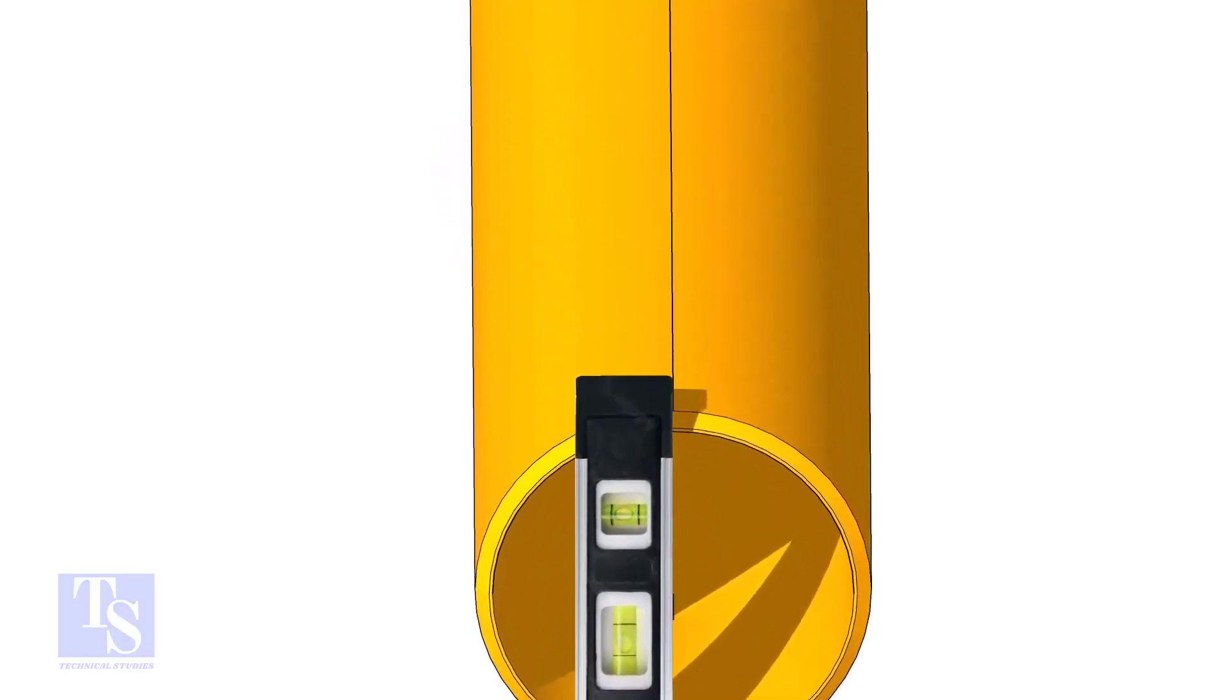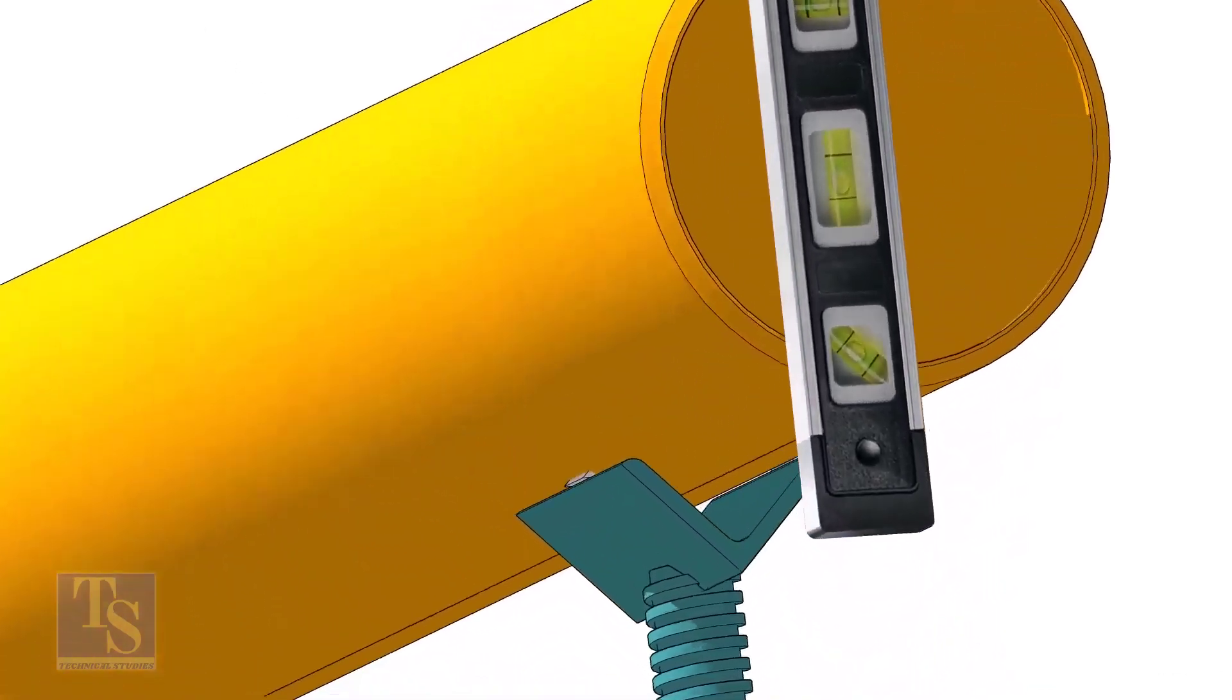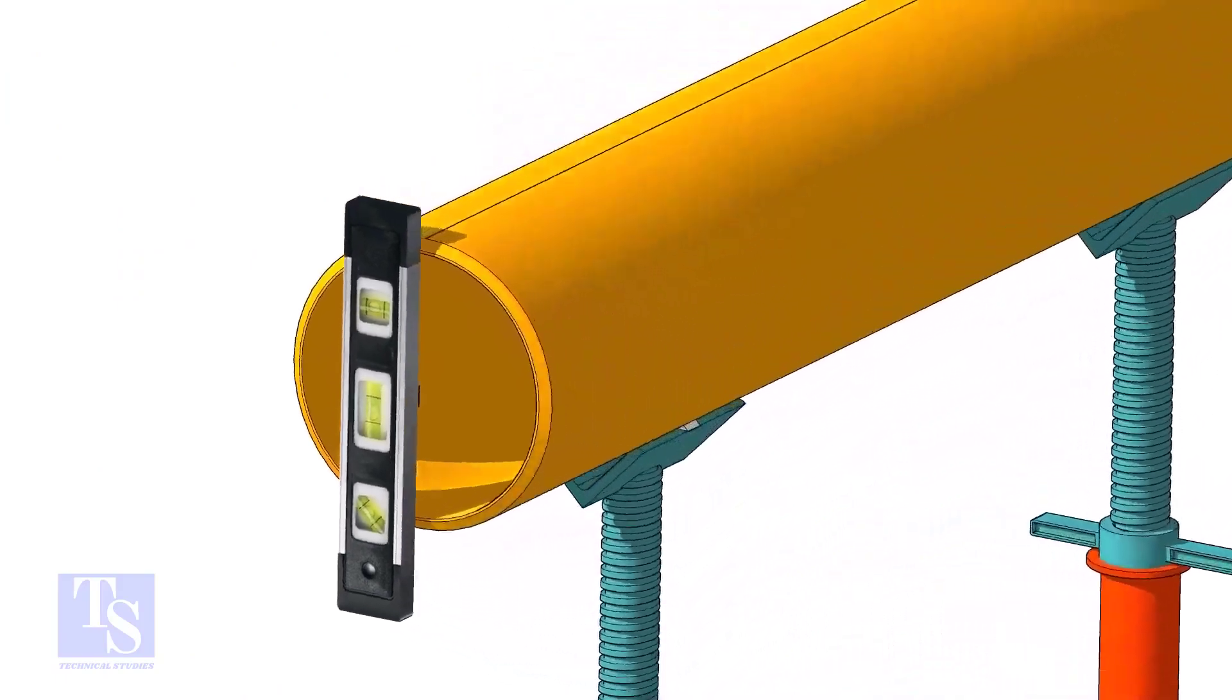Level the pipe horizontally and vertically as shown. After leveling, arrest the pipe to stop it from rotating.